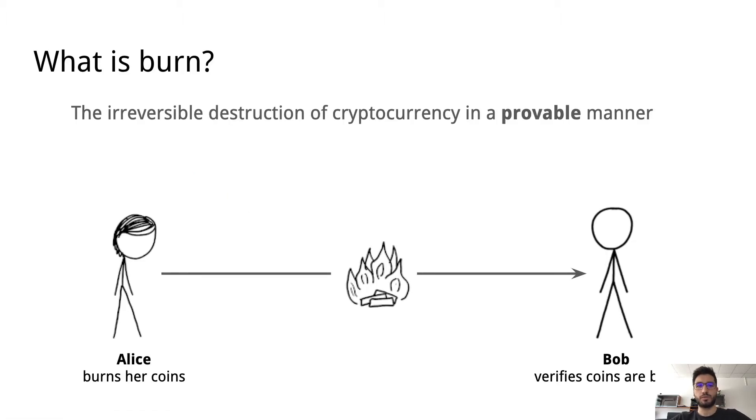This talk is basically concerned with burning cryptocurrency. The kind of setup we have is we have Alice who wishes to burn some of her coins, and then after she does that, she wishes to convince Bob or some other party that her coins are actually burned. For this, she provides him with some proof, and then he can verify that the coins are actually burned.